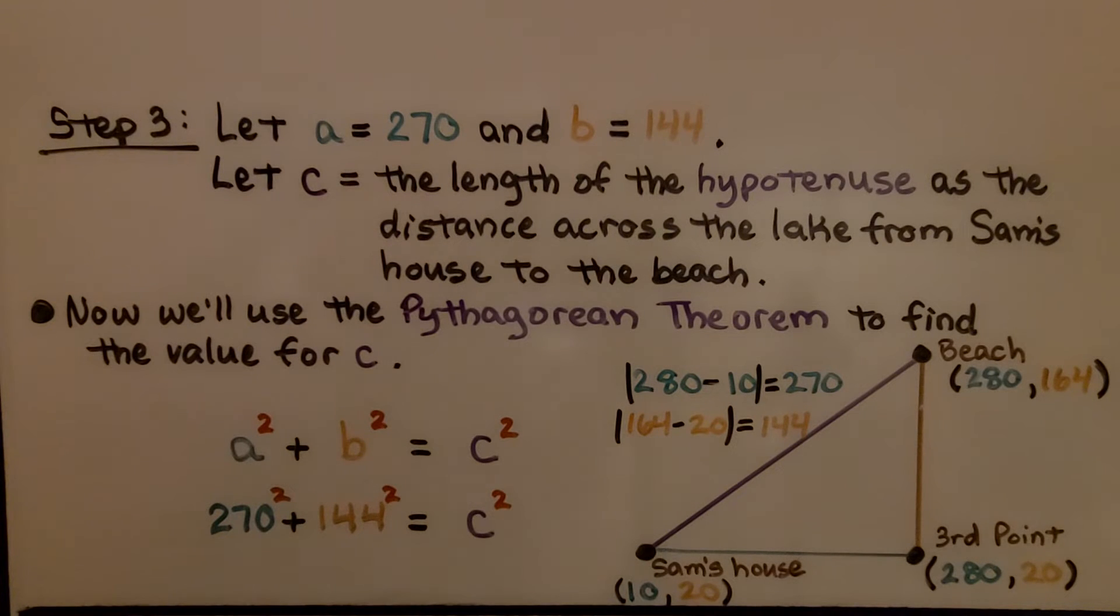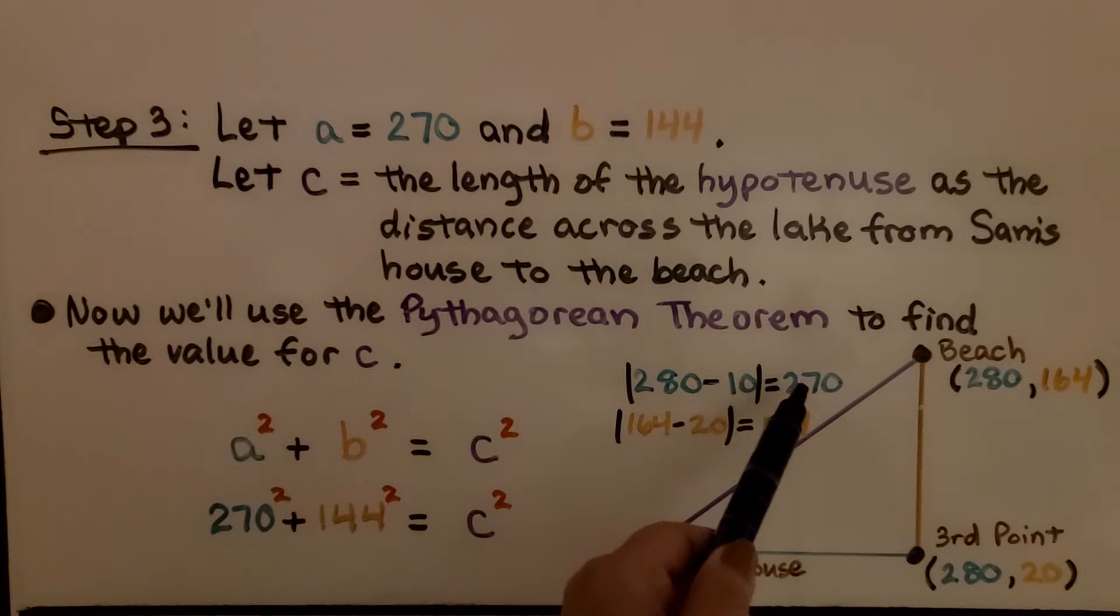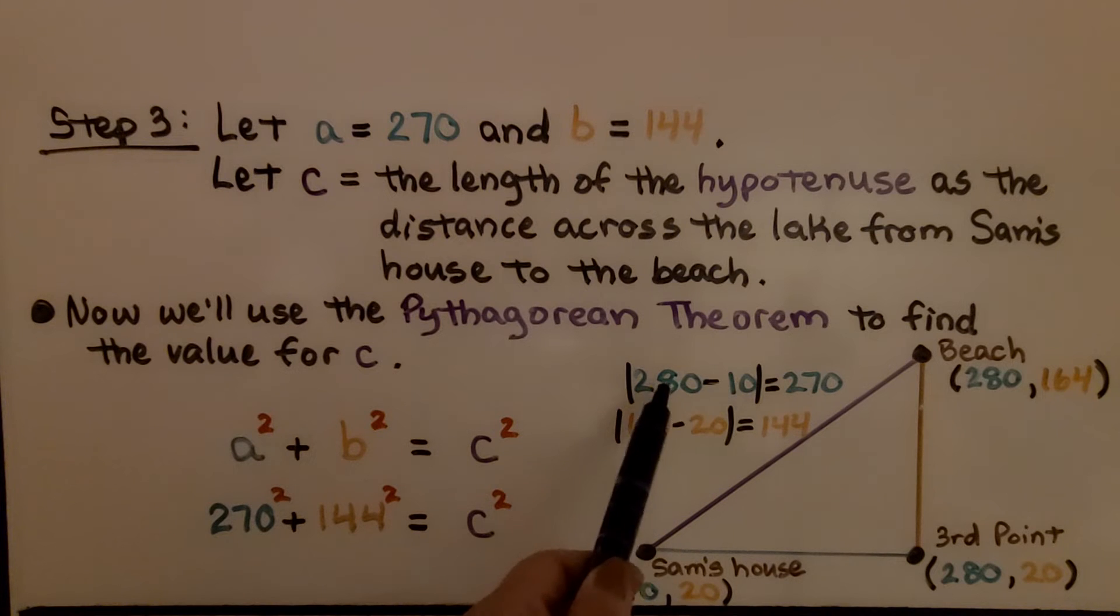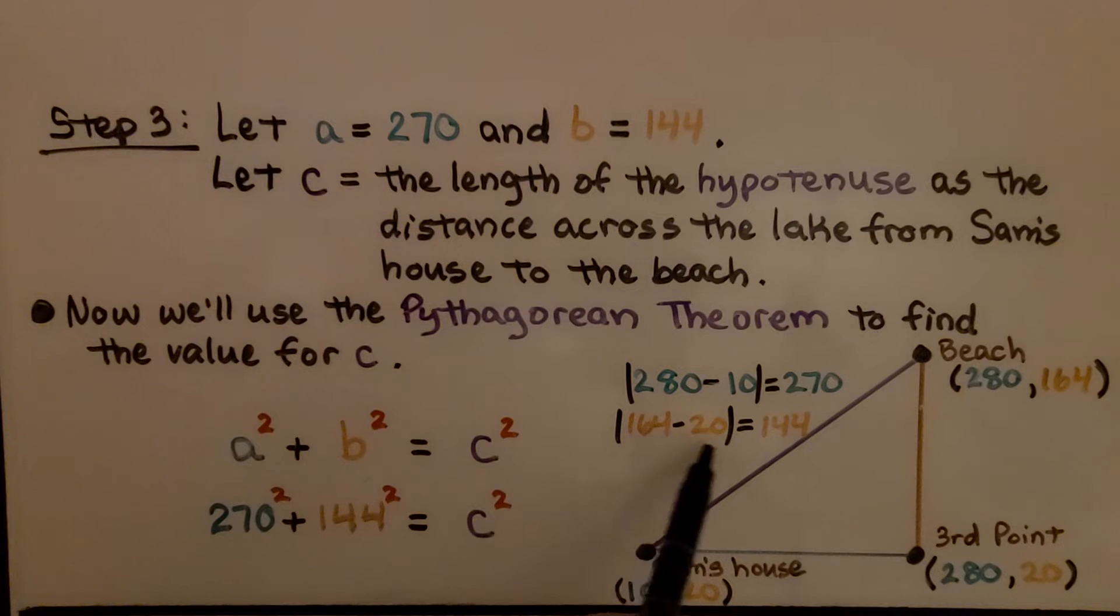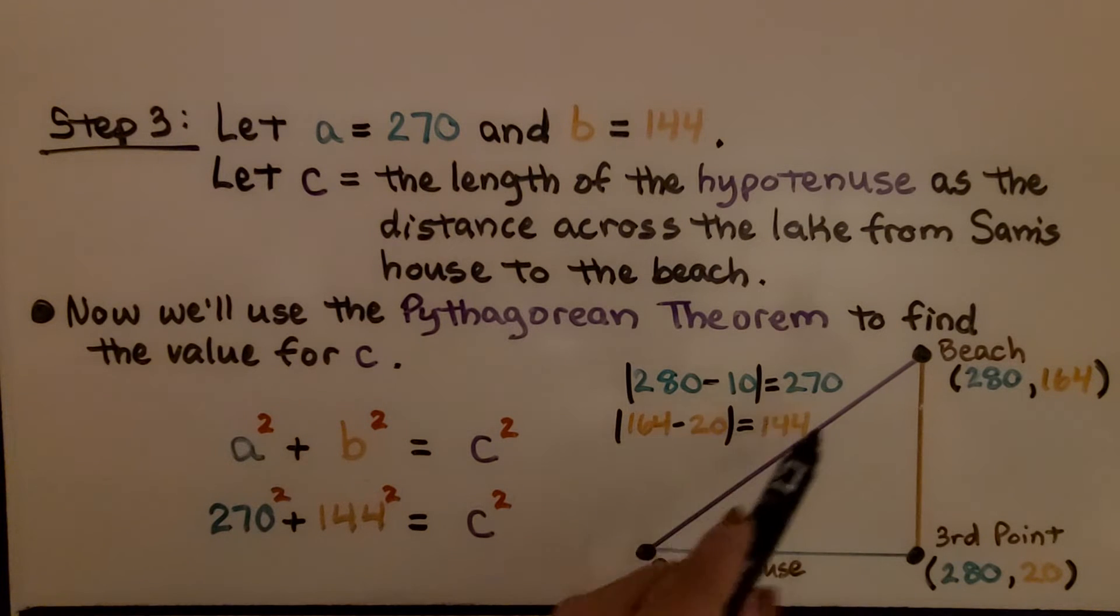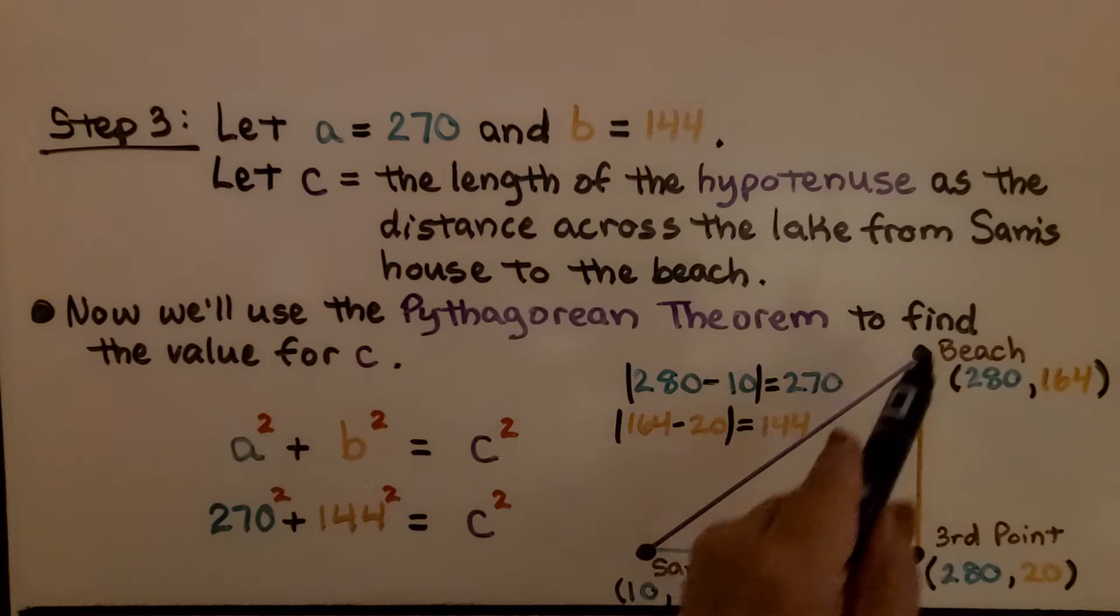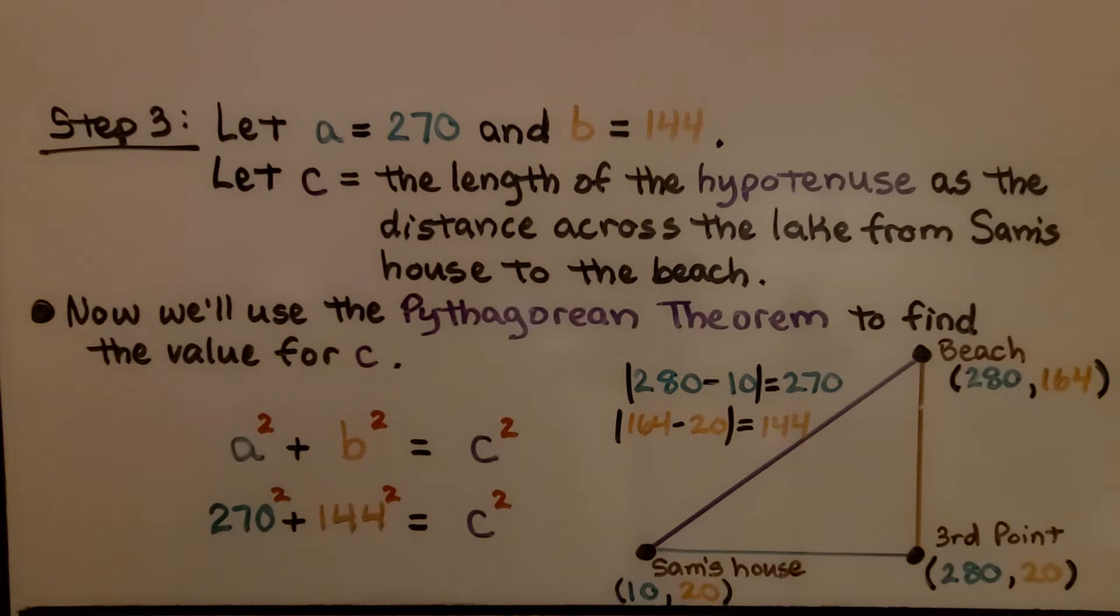Step three, we let A equal 270 and B equal 144. So remember, we got the 270 from doing the absolute value of the difference between the x coordinates. We got the 144 from doing the absolute value difference between the y coordinates. We're going to let C equal the length of the hypotenuse as the distance across the lake from Sam's house to the beach. Now we'll use the Pythagorean theorem to find the value for C. We have A squared plus B squared is equal to C squared.